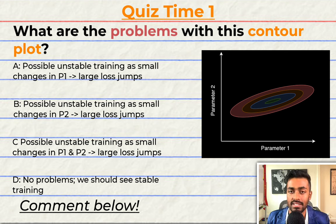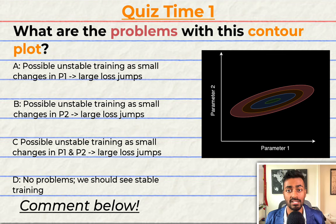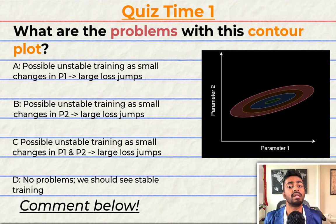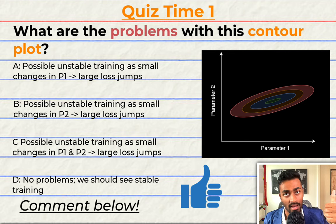Quiz time! What are the problems with this contour plot? A: possible unstable training as small changes in parameter 1 can lead to large jumps in loss. B: possible unstable training as small changes in parameter 2 can lead to large jumps in loss. C: possible unstable training as small changes in both parameters 1 and 2 can lead to large jumps in loss. D: there is no problem and we should have stable training. Comment your answer below and let's have a discussion. If you think I deserve it, please consider giving this video a like.